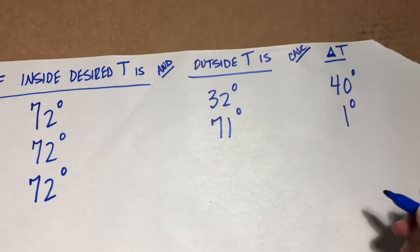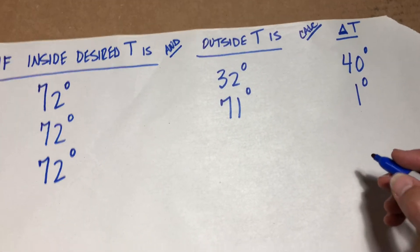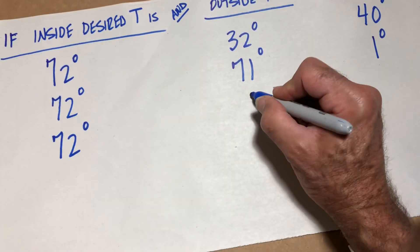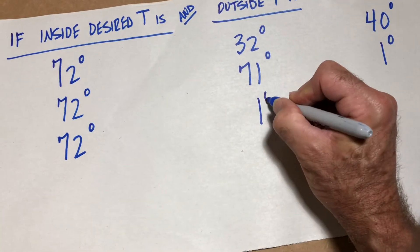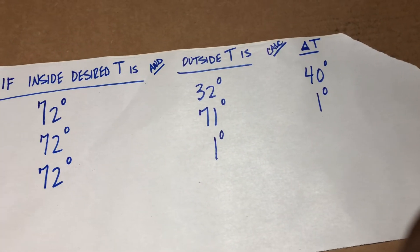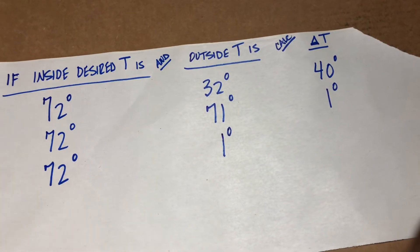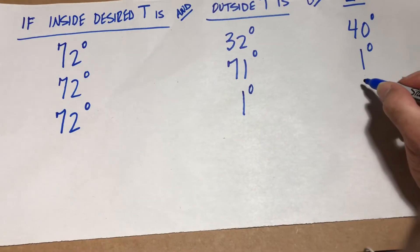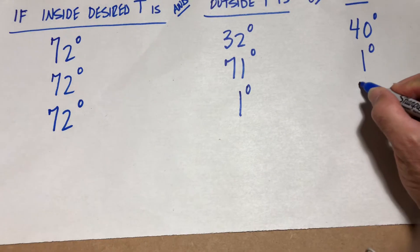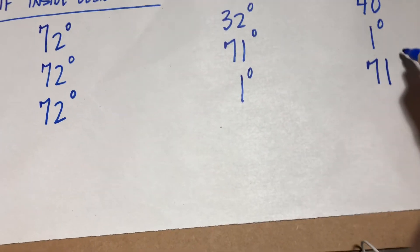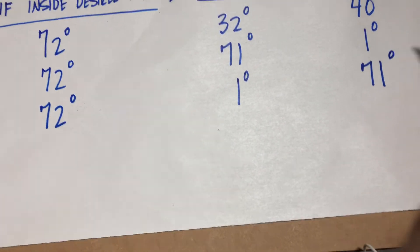Let's say it's really cold out — let's say it's 1 degree. What is the delta T? It is 71 degrees.